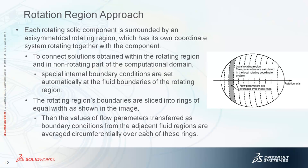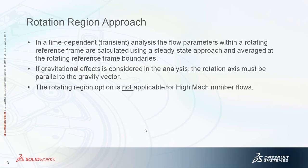This circumferential averaging technique is why it's important that the blades within the model are axisymmetric, because your results can be affected. You can do a time-dependent transient analysis — it's sometimes recommended for certain cases. The time-dependent approach uses a steady-state approach and averages at the rotating reference frame boundaries. If gravitational effects are considered, the rotational axis must be parallel to the gravity vector. The rotating region option is not applicable for high Mach number flows — roughly Mach 1 and higher.